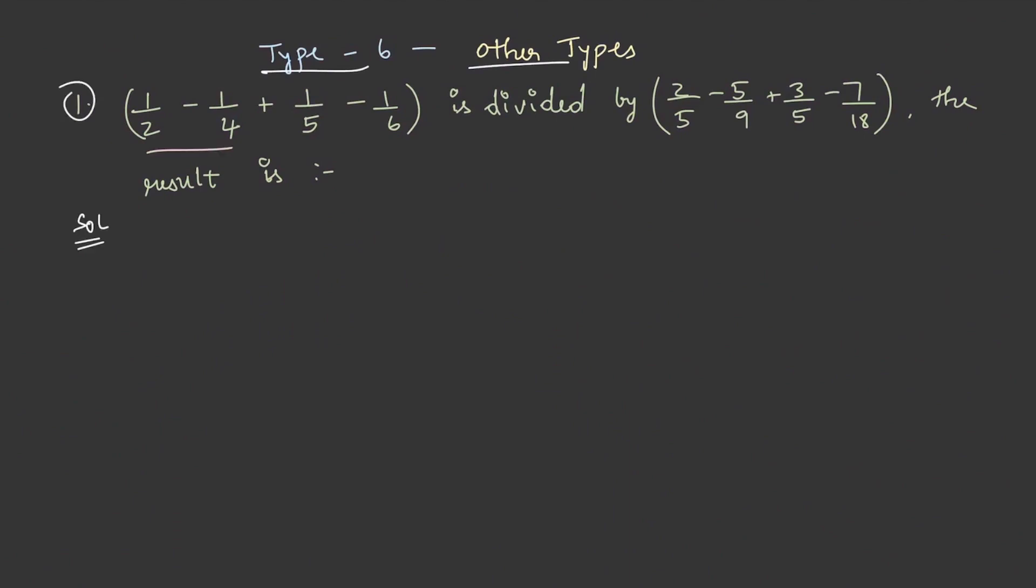1 by 2 minus 1 by 4 plus 1 by 5 minus 1 by 6 is divided by 2 by 5 minus 5 by 9 plus 3 by 5 minus 7 by 18. We shall find out the result of this.